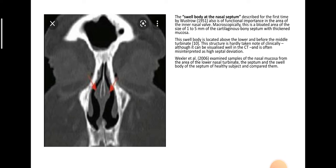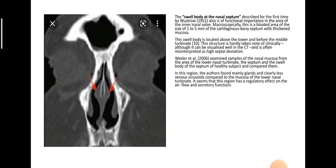Wechsler examined samples of the nasal mucosa from the area of the lower nasal turbinate, the septum, and the swell body of the nasal septum in healthy subjects and compared them. He found in this region mainly glands and clearly fewer venous sinusoids compared to the mucosa of the lower nasal turbinates. It seems that this region has a regulatory effect on airflow and secretory functions.